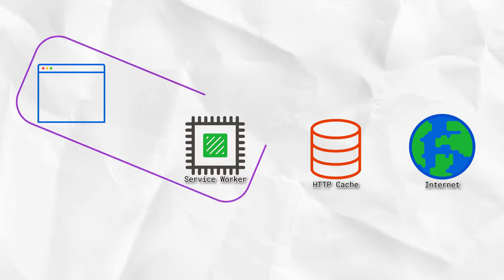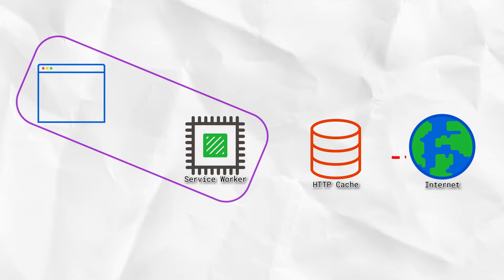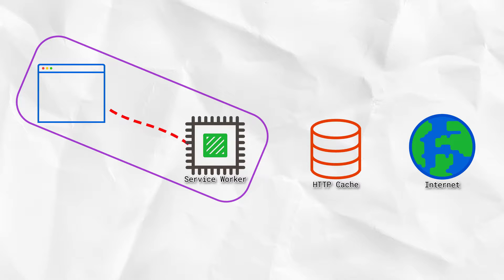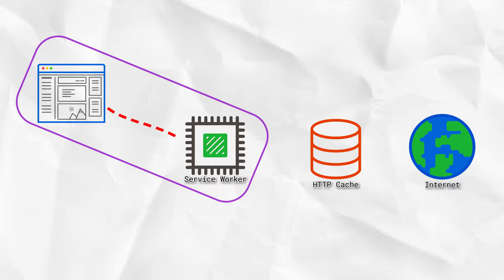So far, we've seen requests go from the page, through the service worker fetch event, then onto the network, as usual, through the HTTP cache. But now we're going to catch the request as it hits the service worker and respond ourselves, so nothing goes to the network. Obviously, this is an important step in going offline first. So let's make it happen.